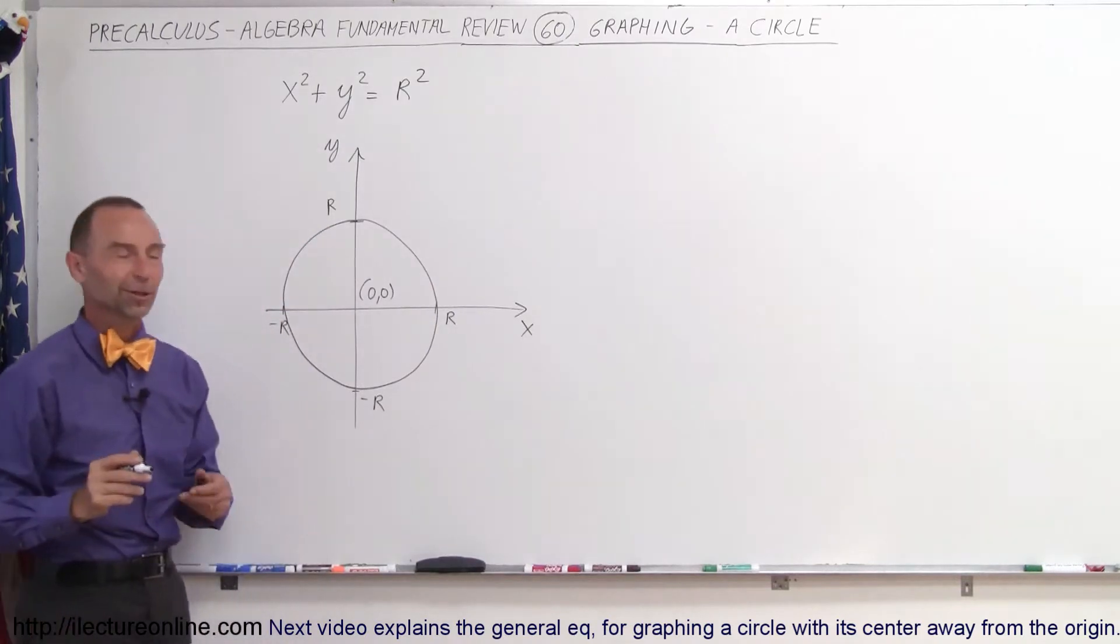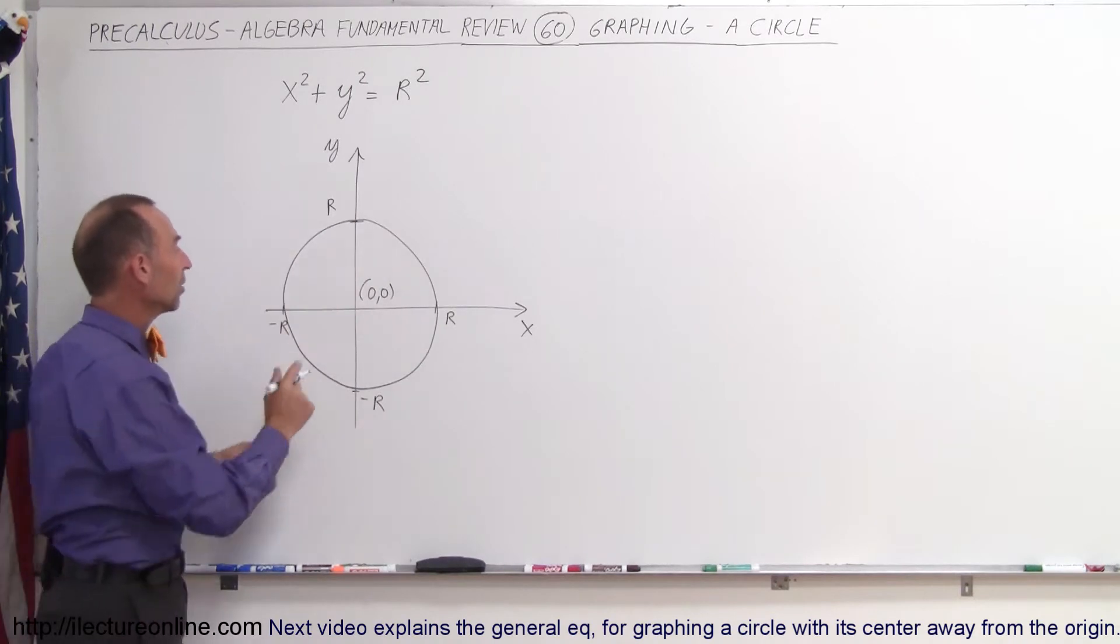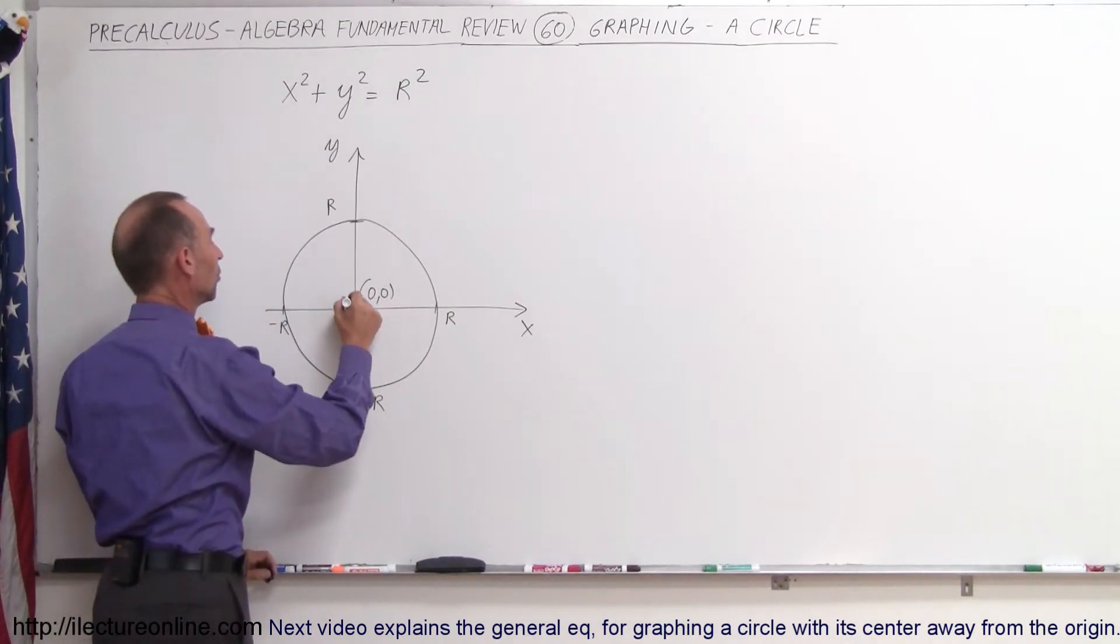Kind of looks like a circle. Alright, so here we place the origin at the center, and we know that the radius is r. So in any direction away from the origin, the distance would be r.